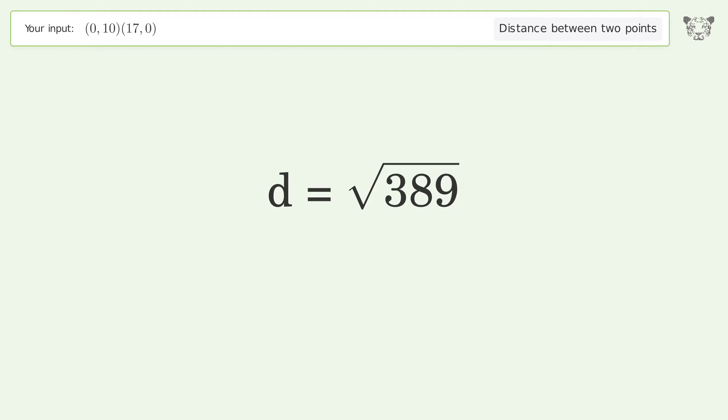And so, the distance between the two points is the square root of 389, or 19.723.